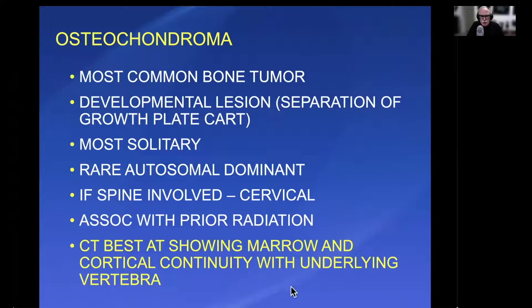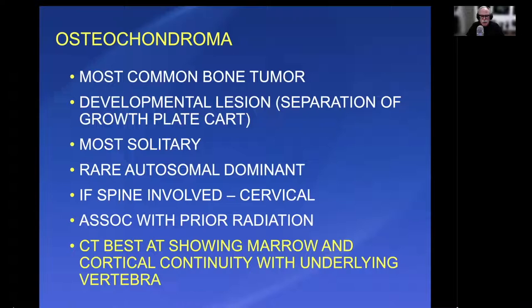The first one in the benign category is osteochondroma. This is the most common bone tumor, thought to be a developmental lesion. Most of these are solitary, with rare autosomal dominant involvement, and importantly they can be associated with prior irradiation. Cervical spine tends to be most common for spinal involvement. It's important to do CT because that's going to be best at showing the contiguity of the marrow and cortex with that lesion.